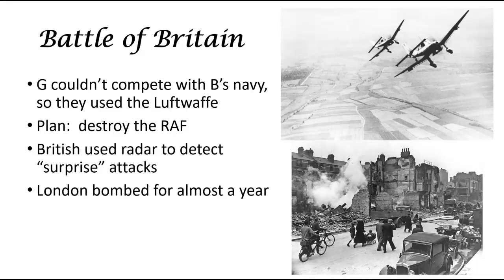Germany knew they could not compete with Britain's navy, so Hitler decides to use the Luftwaffe — Germany's air force — with the plan to destroy the British Royal Air Force, or RAF. Unfortunately for the Germans, they didn't know that the British had radar, so they were able to detect all the surprise attacks and have planes already up in the air, making it much less likely Germany could destroy them. It's a lot easier to bomb planes when they're on the ground. The Germans bomb a number of British cities, and London is bombed for almost a year straight.